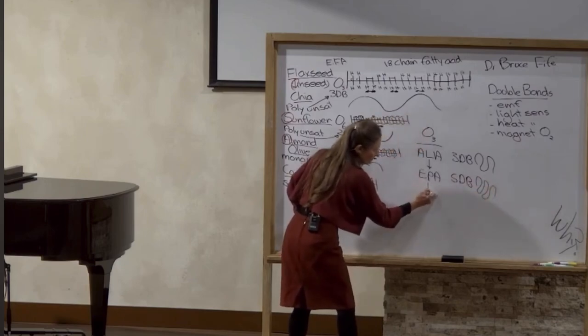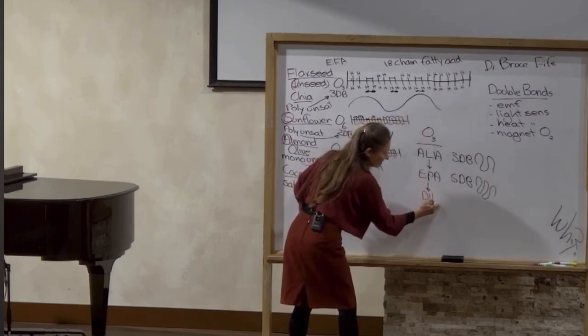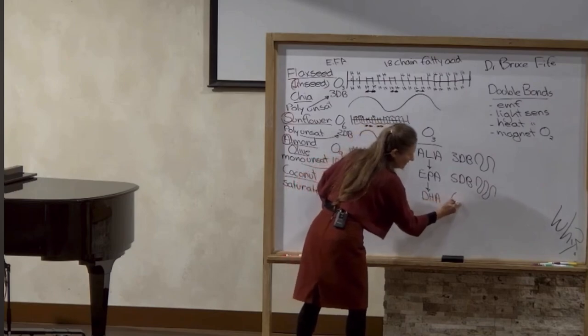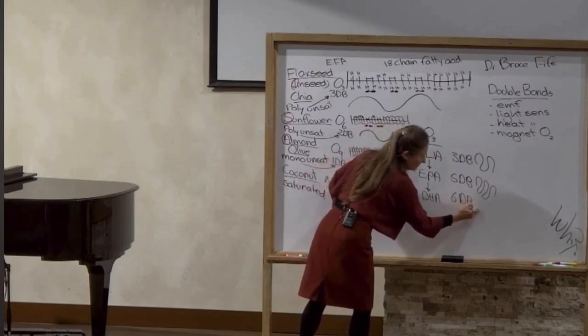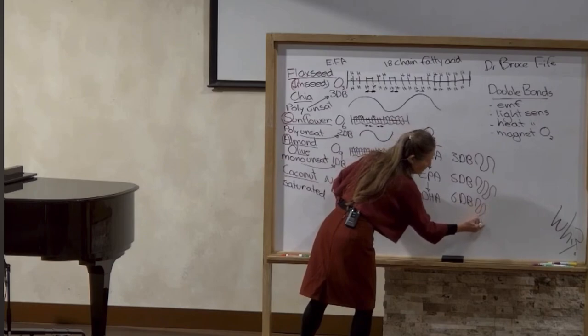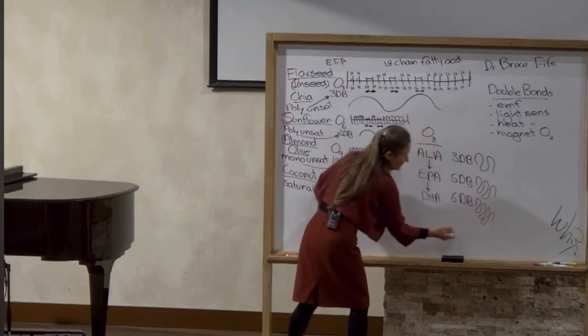In the body, EPA is converted to DHA, docohexaenoic acid, and that has six double bonds. So that's one, two, three, four, five, six. Very thin oil.